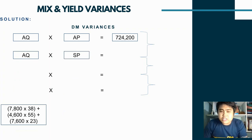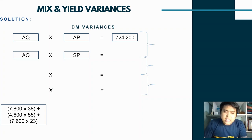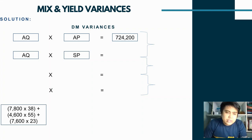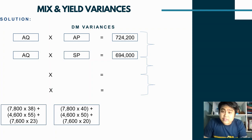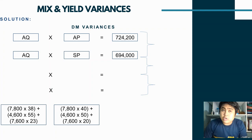Similarly, AQ×SP is also computed separately per type of direct material. Multiply each actual quantity by its respective standard price: carrot juice 7,800×40, cucumber juice 4,600×50, and muriatic acid 7,600×20, for a total of 694,000. The direct material price variance is 30,200 unfavorable because the first line amount is larger than the second. This confirms that mix and yield variance computation is procedural — you must master the procedure.